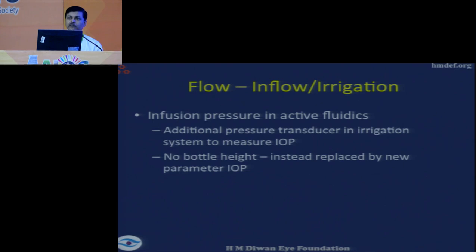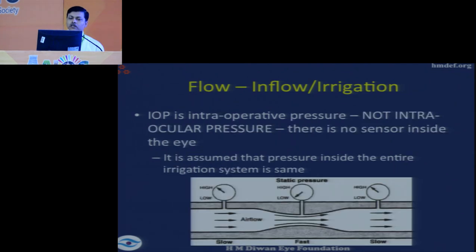Infusion pressure exists in active fluidics, present in one of Alcon's machines, in which an active pressure is used to compress the irrigation bag so that more fluid is forced into the eye. They introduced a parameter called IOP — but this is not intraocular pressure; it is intraoperative pressure. The sensor is inside the irrigation system, but it does not accurately measure pressure inside the eye, because wherever there is a narrowing of diameter in the circuit, there will be a fall in pressure.